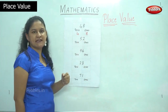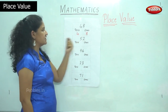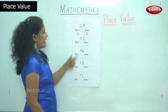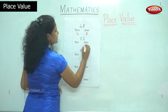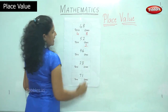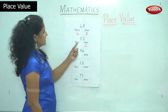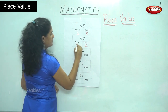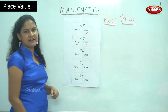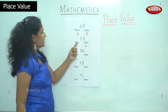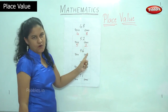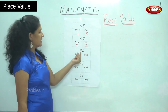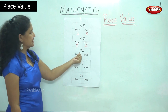Moving on to the next number, which is 52. In the 1s place I have number 2, and in the 10s place I have number 5. So the number is read as 5 10s and 2 1s. Next number is 96.